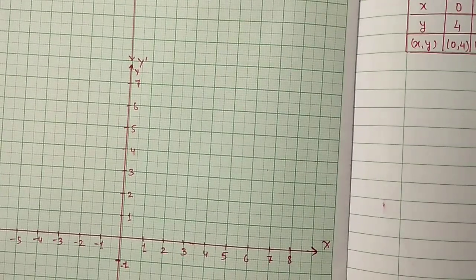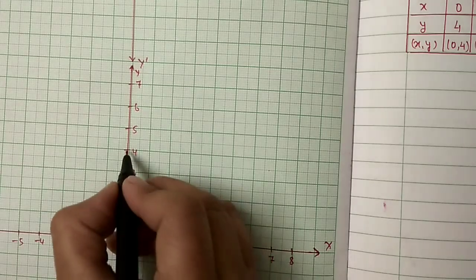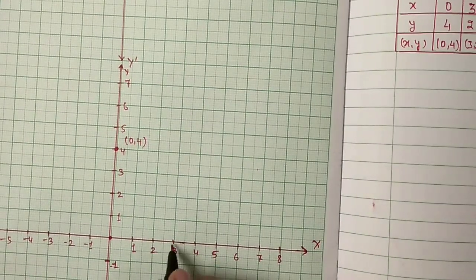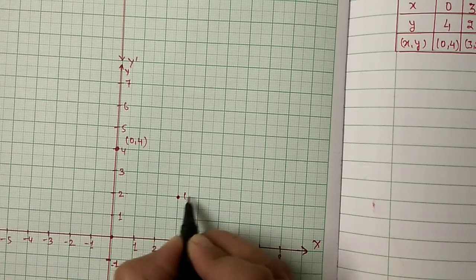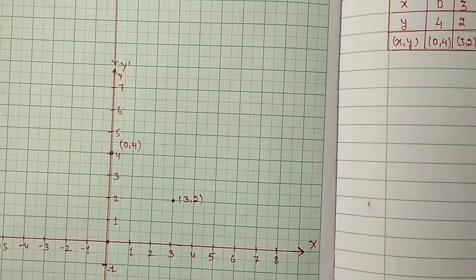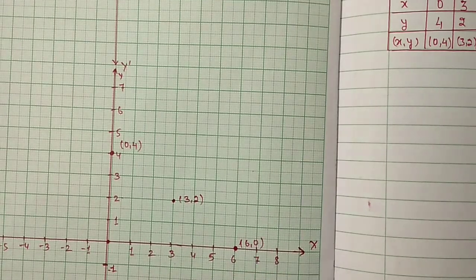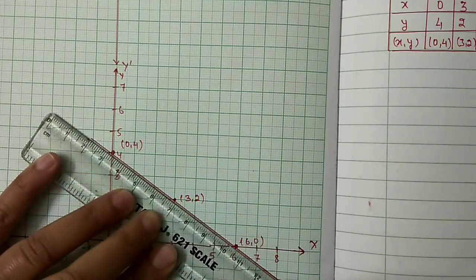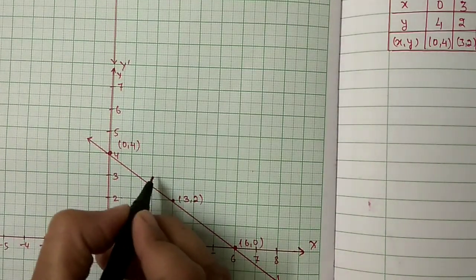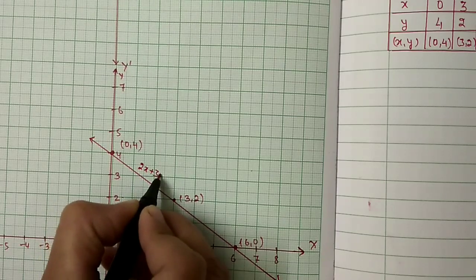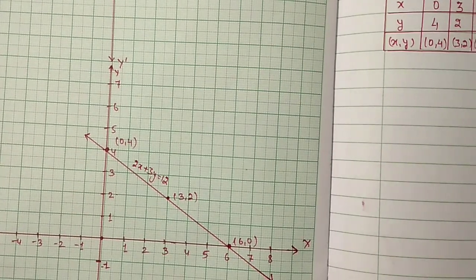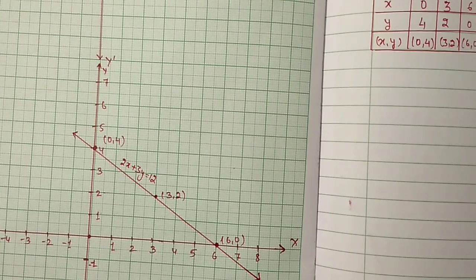Now plot these three points on a graph. First point: x = 0, y = 4 — this is (0, 4). Second point: (3, 2). Third point: (6, 0). Draw a line passing through these three points, put arrows on both sides, and write the equation: 2x + 3y = 12. In this video we have covered plotting points and graphical representation of linear equations. Hope you understood — thank you for watching.